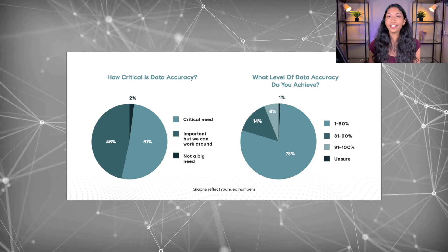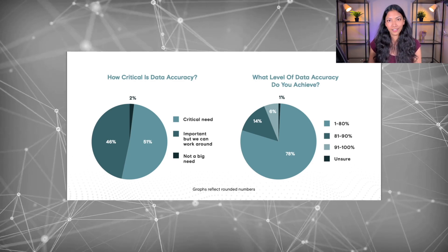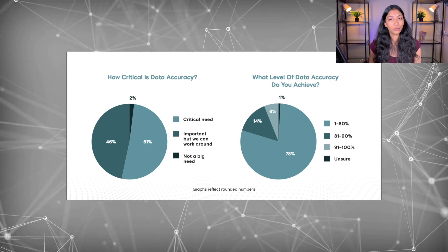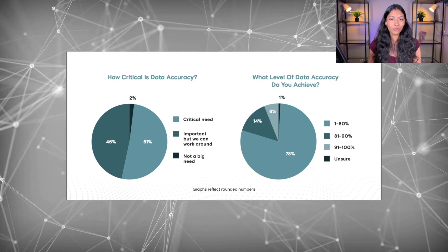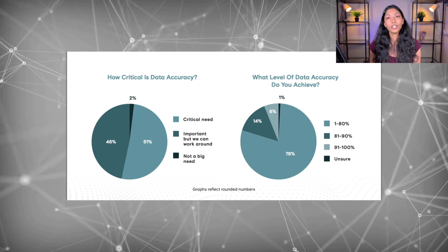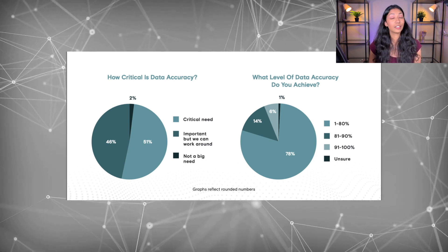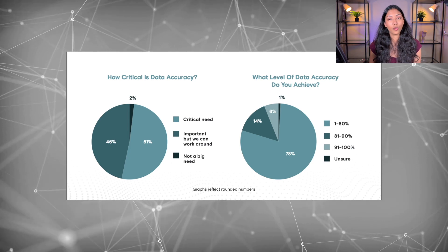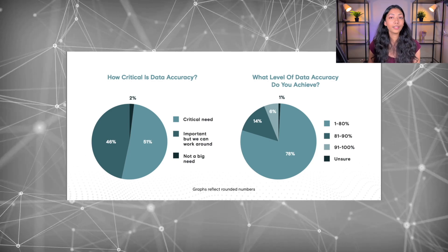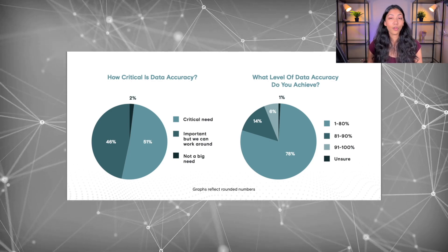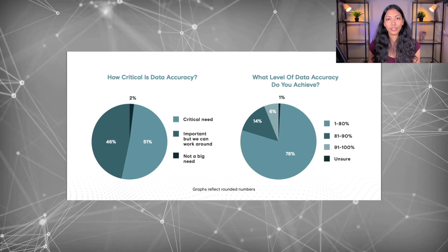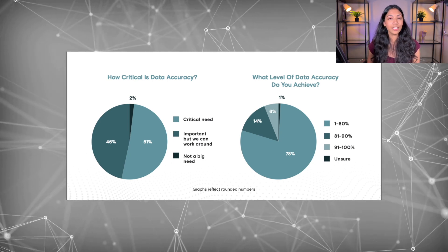The fourth thing you should know about machine learning has to do with the quality of data. According to this study by Appen, 51 percent of machine learning engineers and data scientists agree that accurate data is very important. However, only 20 percent of them actually reported achieving a data accuracy of over 80 percent. In the majority of use cases there seems to be a lot of data available, but data quality is lacking.